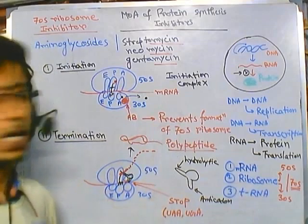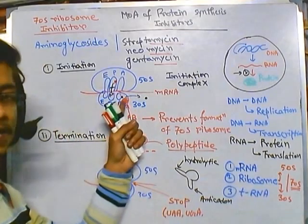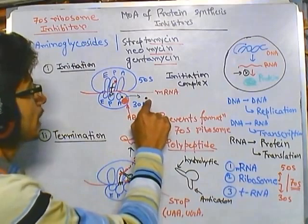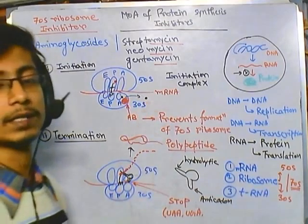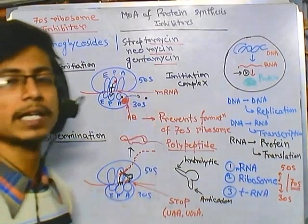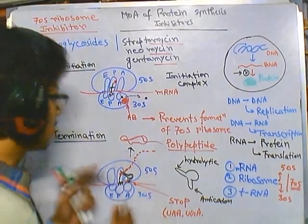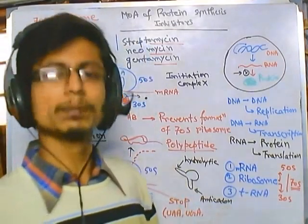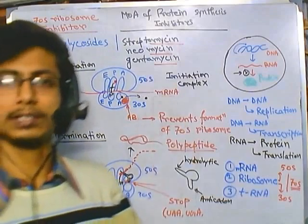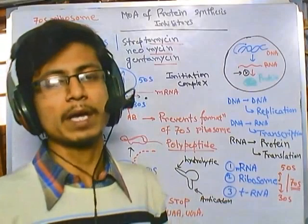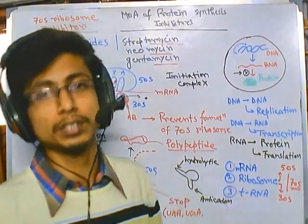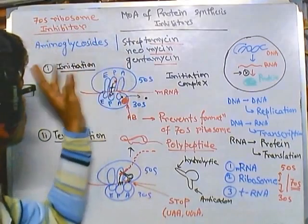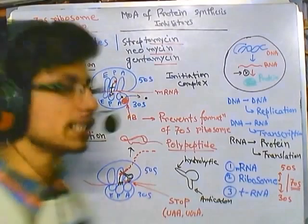In both cases — initiation and termination — the mechanism involves attachment to the A site: at initiation it blocks the release of the release factor, and at termination it blocks the attachment of the release factor. In both cases it interferes with release factor binding at the A site, preventing protein synthesis. For this reason 70S ribosome inhibitors are deadly to bacteria, but most of the time they have a bacteriostatic effect. Bacteria can survive for some time without protein synthesis, but if the antibiotic is administered for a longer period, the cell will die.